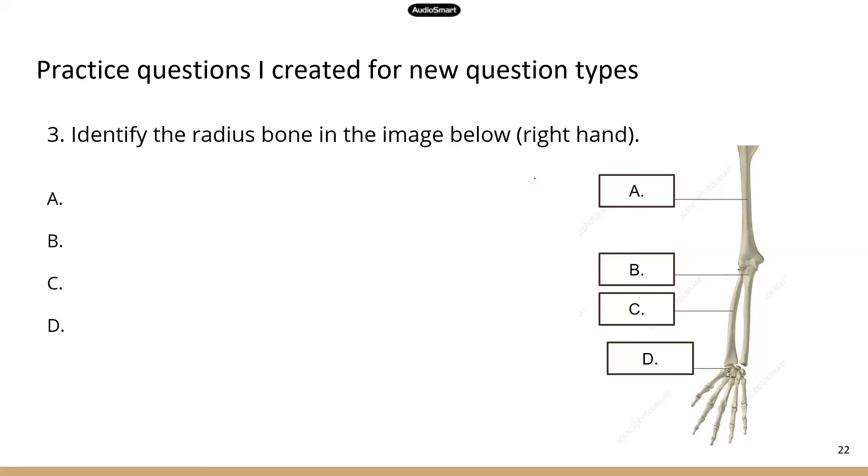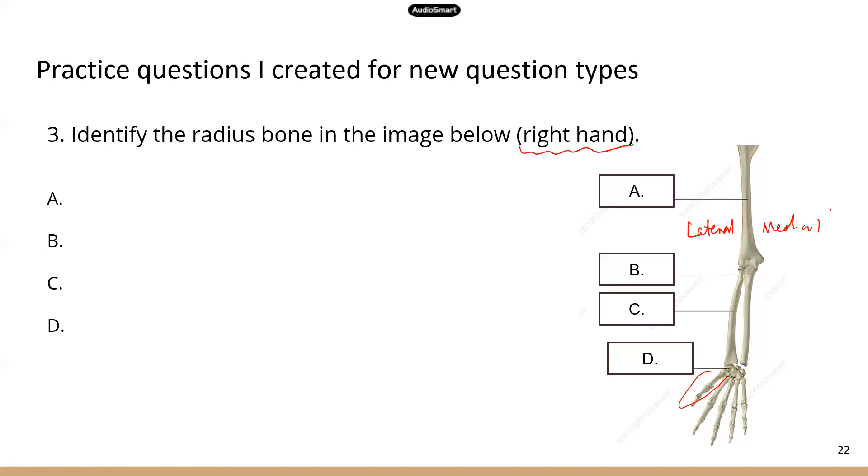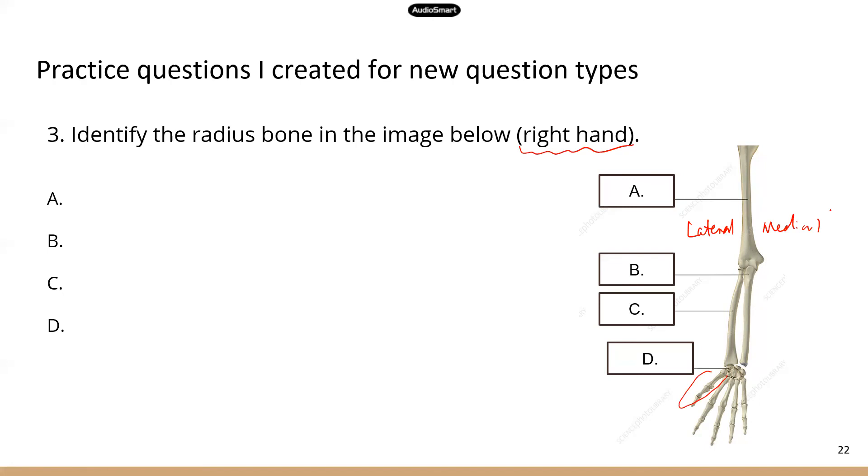All right, number three. Identify the radius bone in the image below. And there is some important information here. This is the right hand, and then you can see the thumb over here. So this side is going to be the lateral side, and the other side is going to be the medial side. Okay. Now, so in order to answer this question, you also need to know all the bones in the body. So this is part of the requirement for the skeletal system. So A is going to be the humerus bone. And then B is going to be the ulna bone. So ulna, there's a little bit piece here for ulna that kind of forms your elbow.